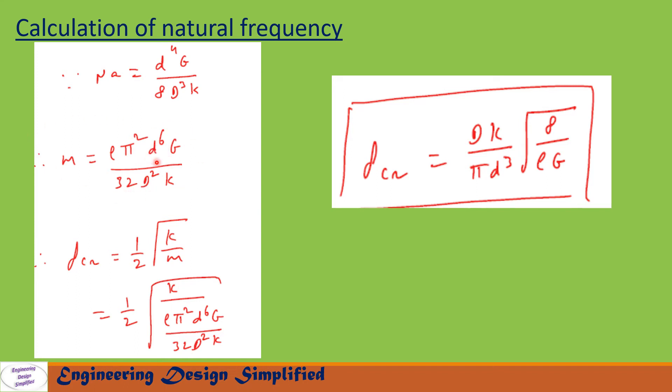Let us substitute this m into the critical frequency equation. We get f_cr equals 1 by 2 square root of k by m, that can be written as 1 by 2 square root of k by rho pi squared d to the power 6 G by 32 D squared k. After simplification, we get critical frequency of the spring f_cr equals Dk by pi d cubed square root of 8 by rho G.